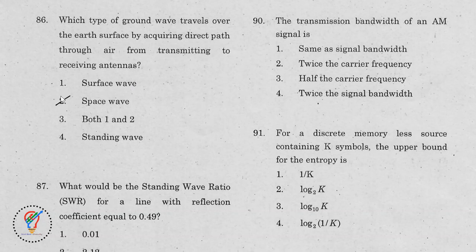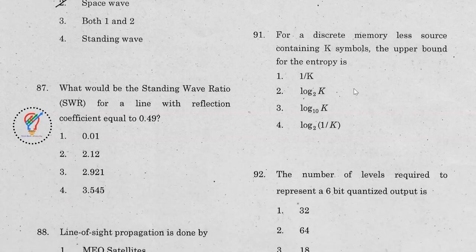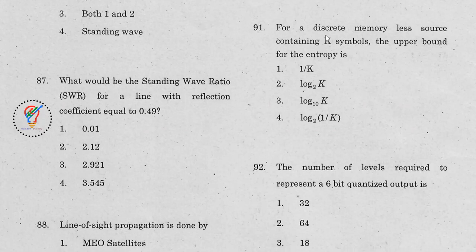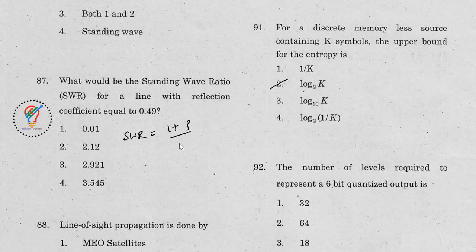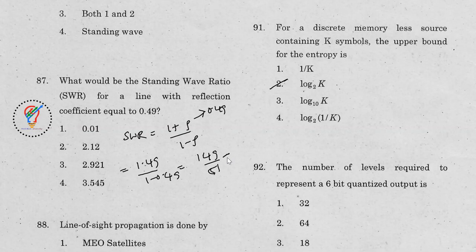Question 90: The transmission bandwidth of an AM signal is twice the signal bandwidth. Question 91: For a discrete memoryless source containing k symbols, the upper bound for entropy is log₂(k) — option 2. Question 92: For a line with reflection coefficient of 0.49, SWR = (1 + 0.49) / (1 − 0.49) = 1.49 / 0.51.